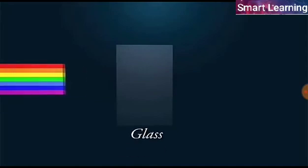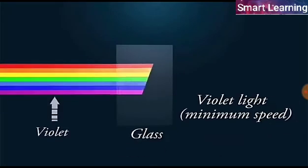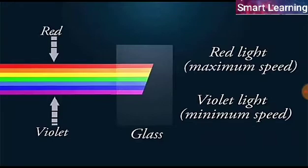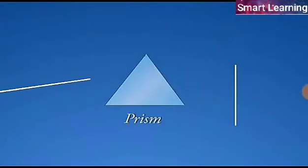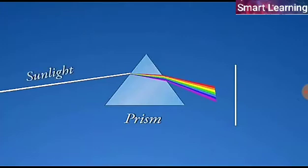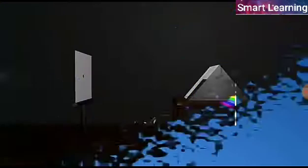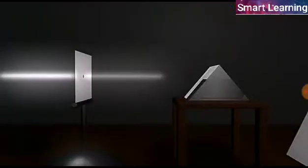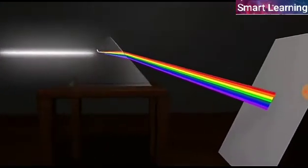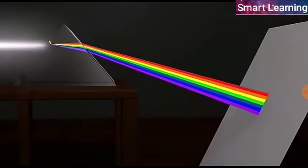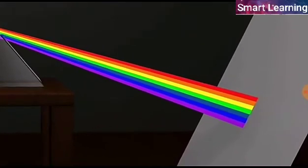For example, in glass, violet color has the minimum speed while red color has the maximum speed. Due to the difference in their speeds, the different colors of light bend through different angles with respect to the incident ray. This is the reason why the different colors emerge along different paths and become distinct, thus giving a band of distinct colors of the spectrum.